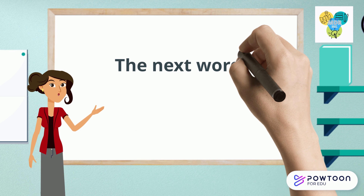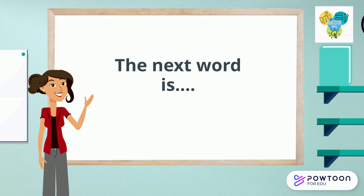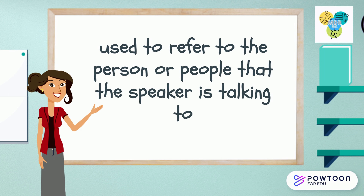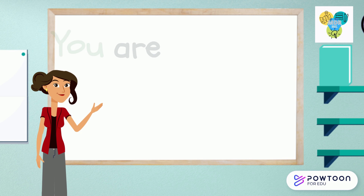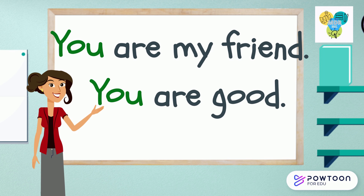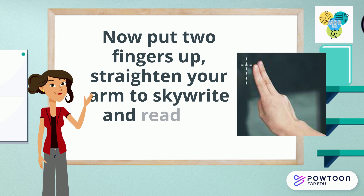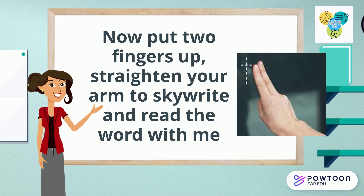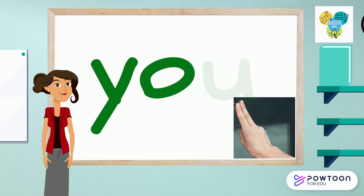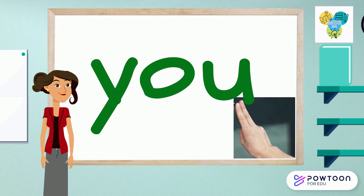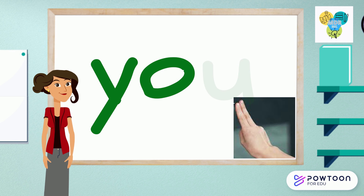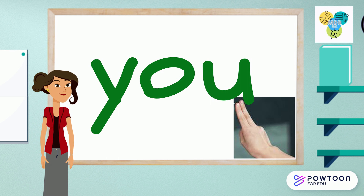The next word is... You. 'You' is used to refer to the person or people that the speaker is talking to. Now put your two fingers up, straighten your arm to skyline and read the word with me. Y, o, u — you. Y, o, u — you.